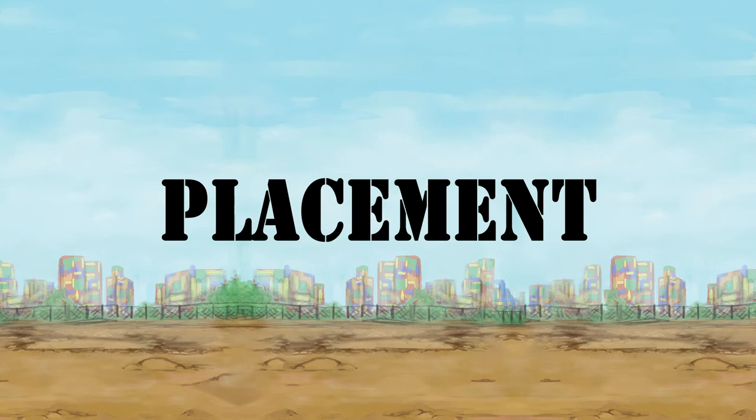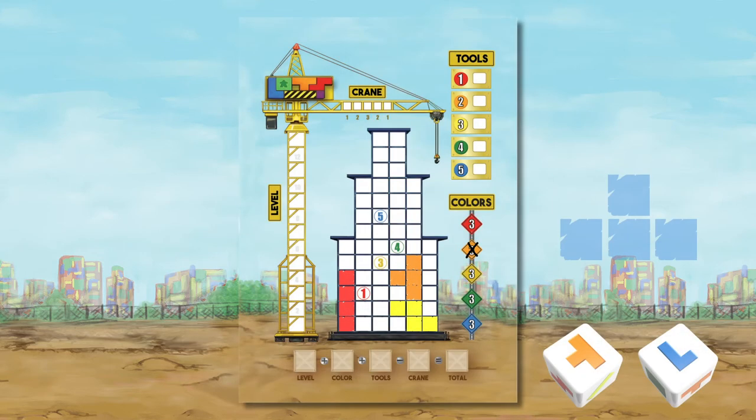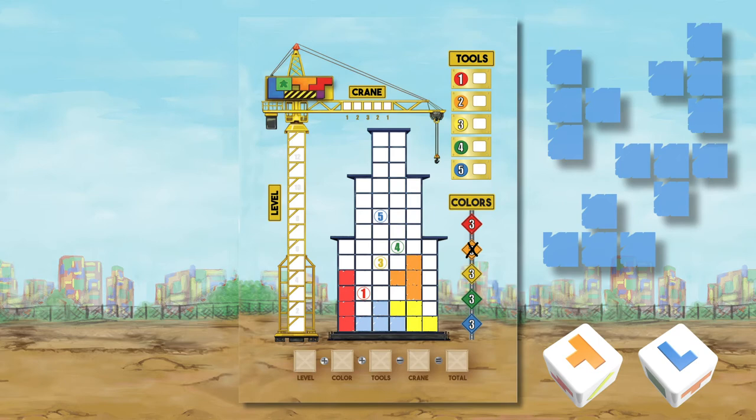Once all players have crafted the block they want to use, it's time to move to phase three, placement. When placing your block, it must either touch another block orthogonally or place on the foundation. Any blocks can be rotated and flipped, and use the colored pencils to fill in its color.